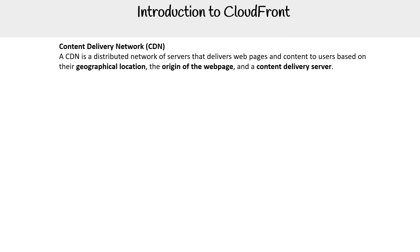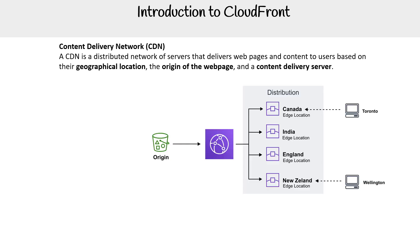A CDN is a distributed network of servers that deliver web pages and content to users based on their geographical location, the origin of the web page, and a content delivery server. More or less, it is a global cache.